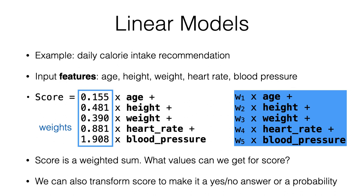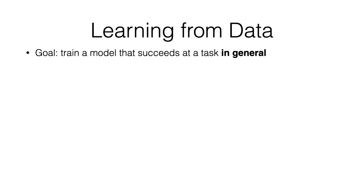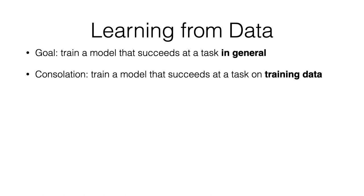The most important thing is that we're not just going to throw these numbers into the app and use it — we're going to learn from data. The goal in machine learning is to train a model that succeeds at a task in general. We can't ever fully achieve that because we don't see everything in the world; instead what we have is training data — some data we've collected, maybe through surveys.